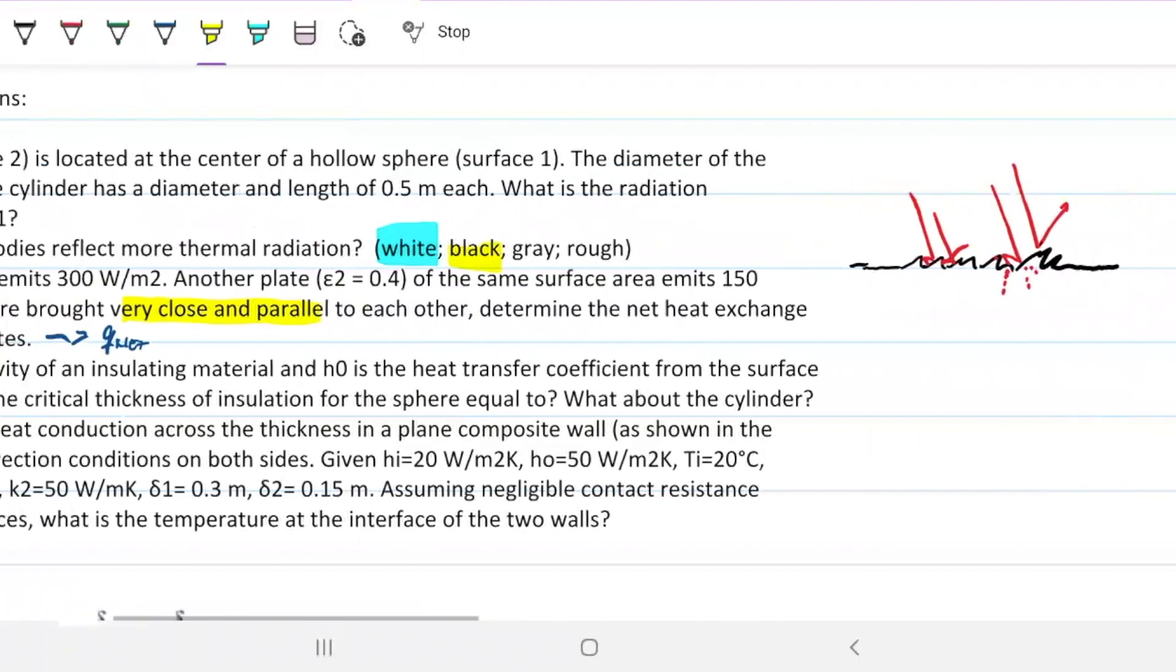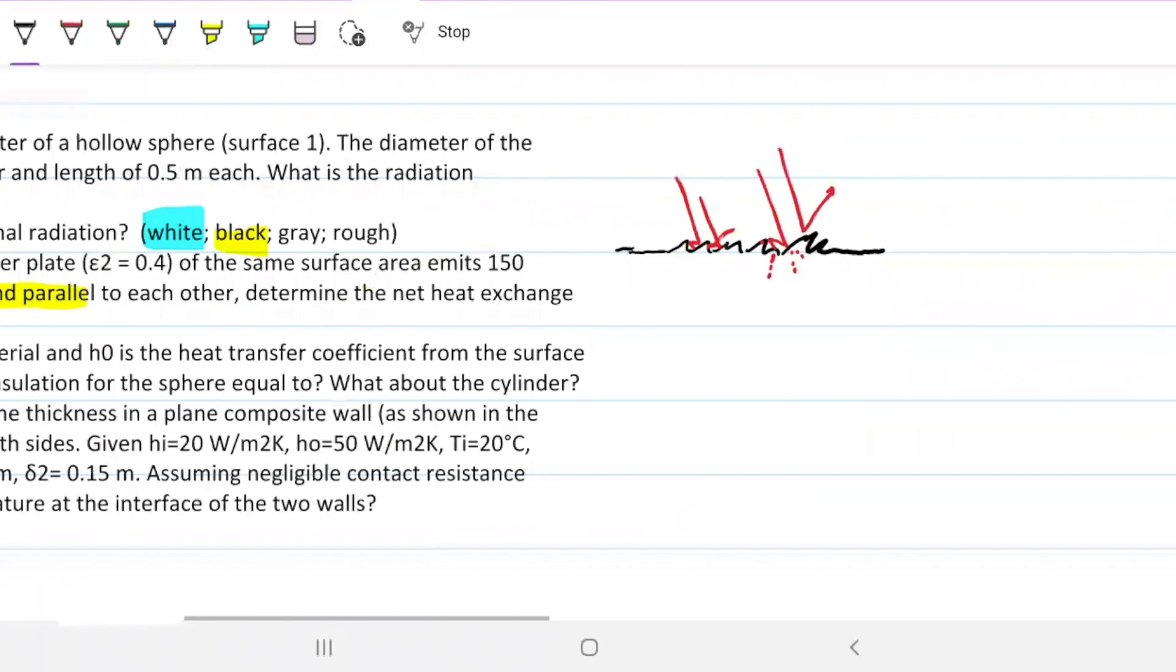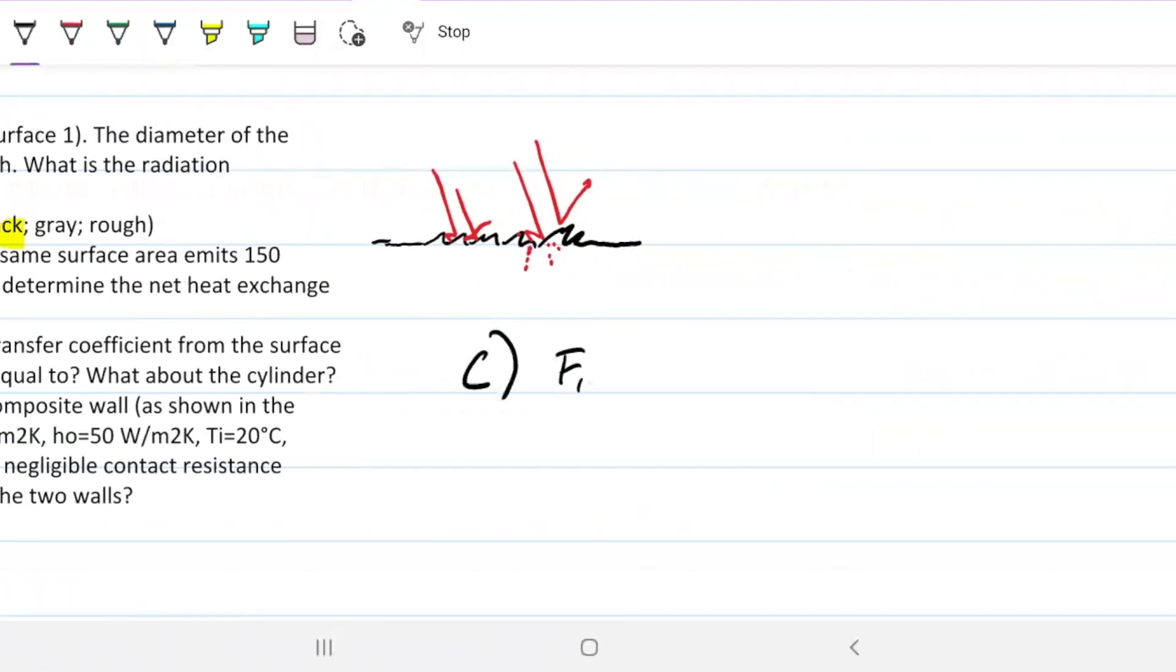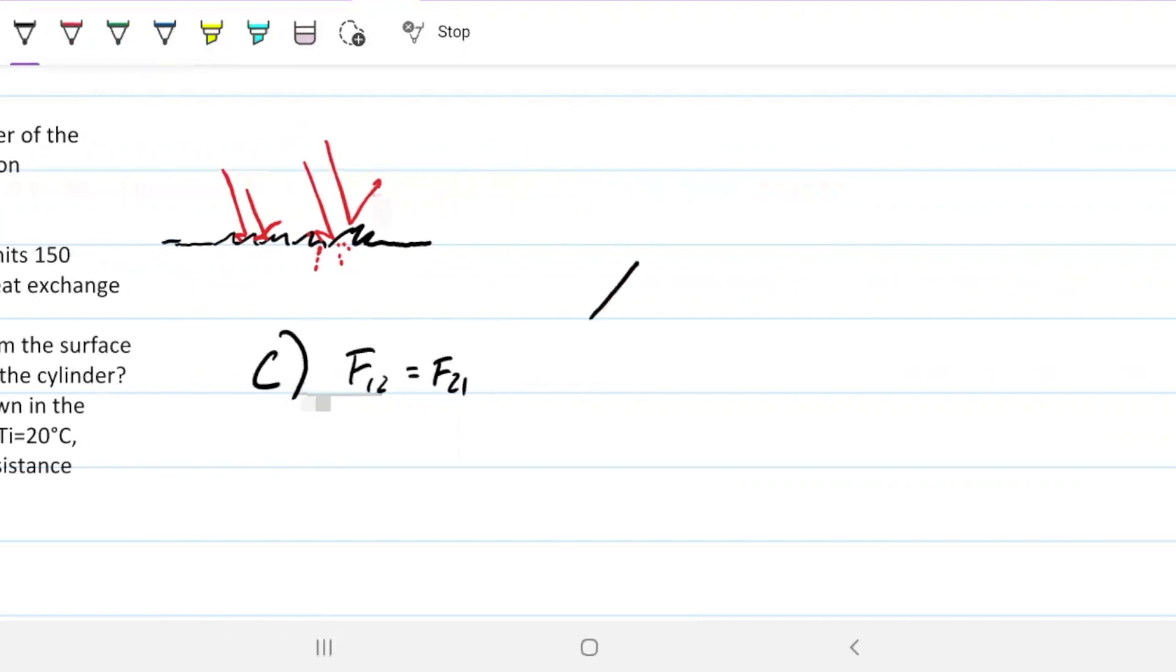So we could go ahead and say that F1,2 equals F2,1. And let's, for the sake of it, just draw the two here. The two parallel plates.